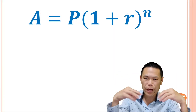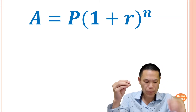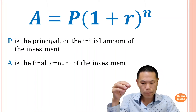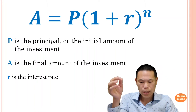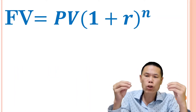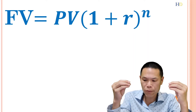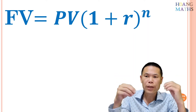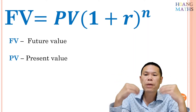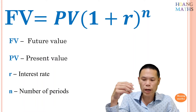First of all, we know that the compound interest formula is A equals P times (1 plus r) to the power of n. P is the amount of money that we invest, or the initial amount. A is the final amount, r is the interest rate, and n is the period. We can also write it as FV equals PV times (1 plus r) to the power of n — this is exactly the same. FV is the future value, and PV is the present value.